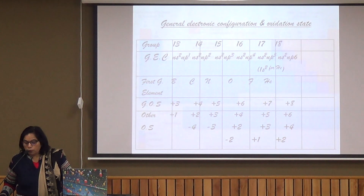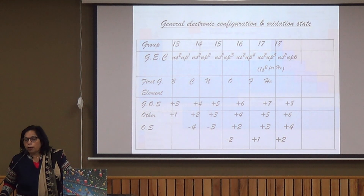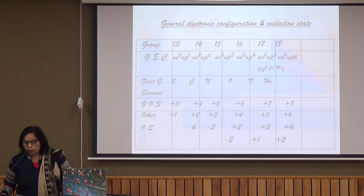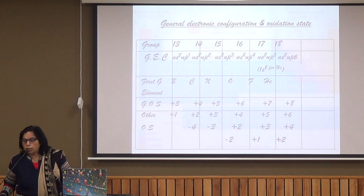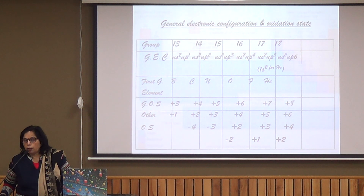The general electronic configuration and oxidation state: in group 13 the configuration is NS2 P1, group 14 NS2 P2, group 15 NS2 P3, group 16 NS2 P4, group 17 NS2 P5, and group 18 NS2 P6.